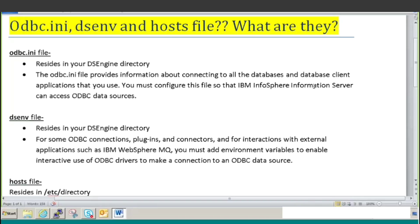You must configure this file so that IBM Information Server can access ODBC data sources. In my earlier video, I explained to you how to connect to ODBC data sources - how we get connections from our database server. So the odbc.ini file contains those databases and their configuration variables. I will also show you that odbc.ini file, what it contains, and how it looks like.